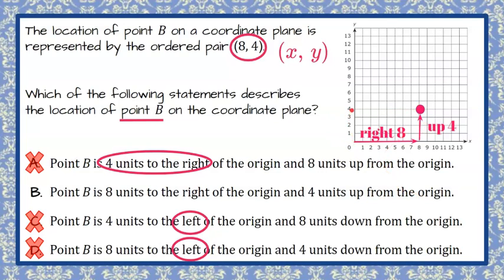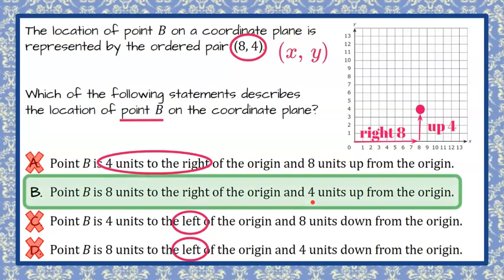And here's our origin. It's 4 units up, but to the right 8. So point B is 8 units to the right and 4 units up, giving us our solution of B.